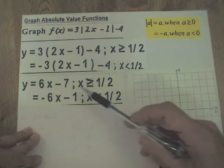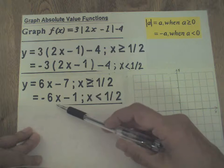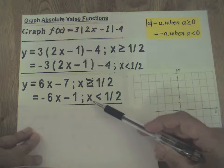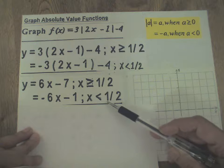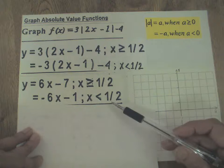y = 6x - 7 when x is greater than or equal to 1/2. It's -6x - 1 when x is less than 1/2. So our original absolute value function can be rewritten as a piecewise function.